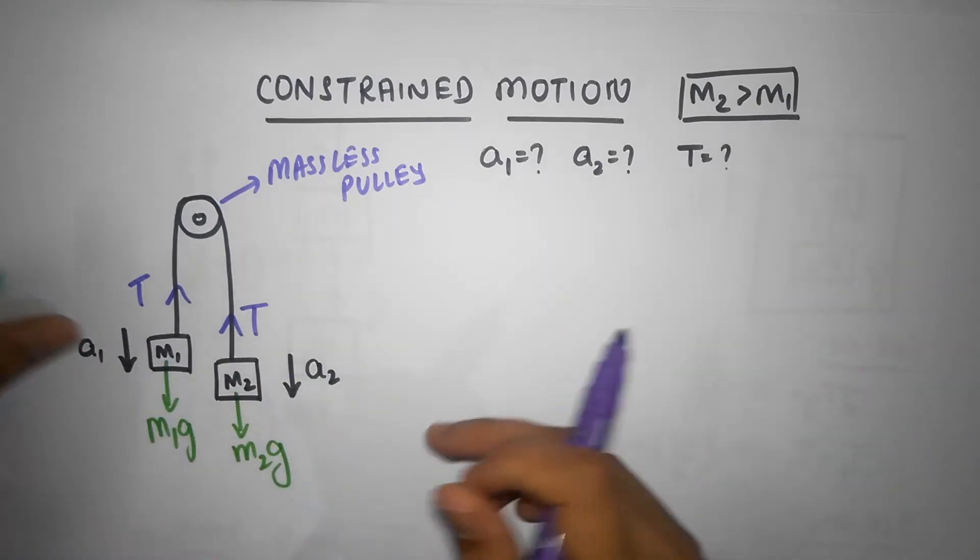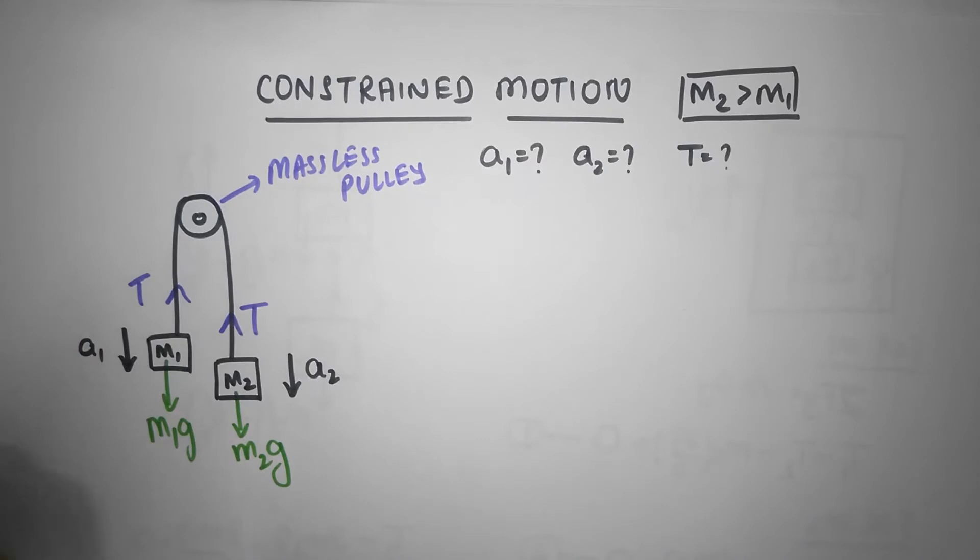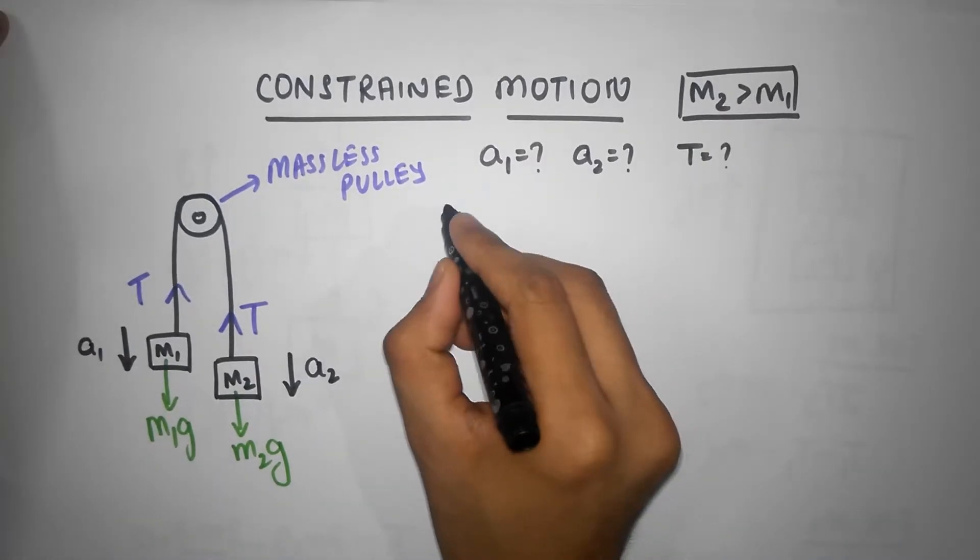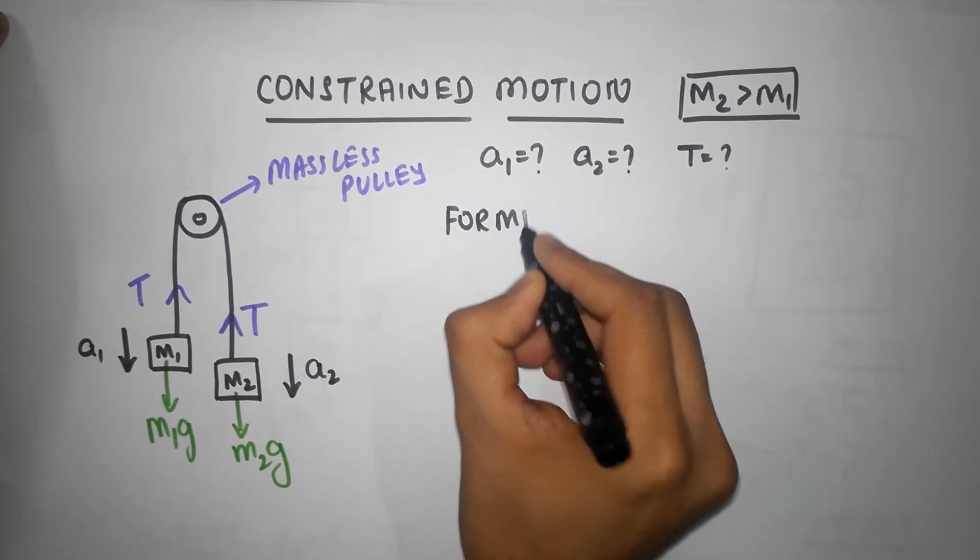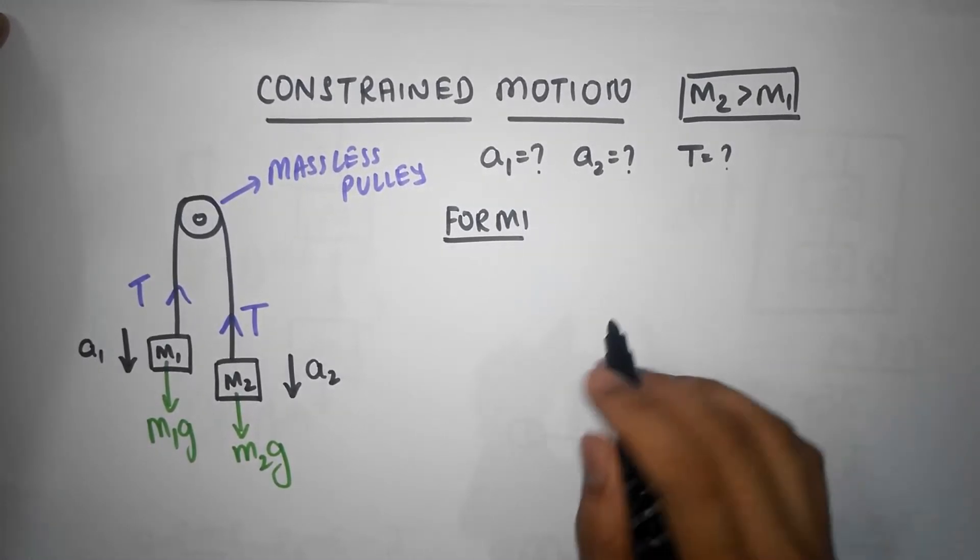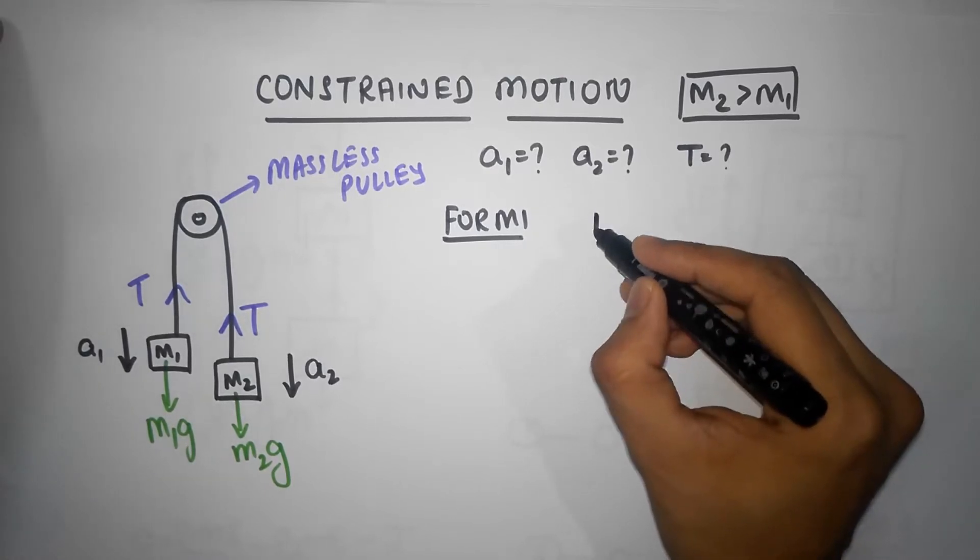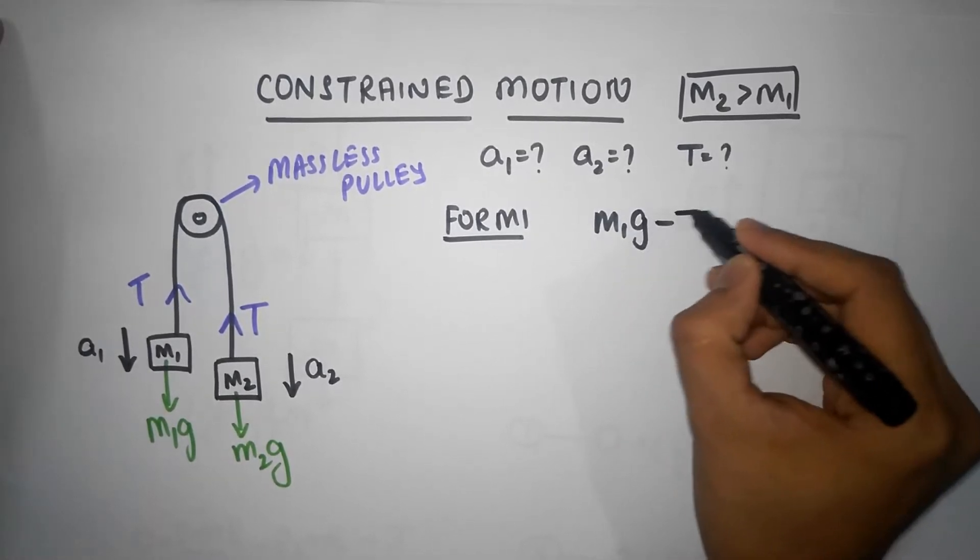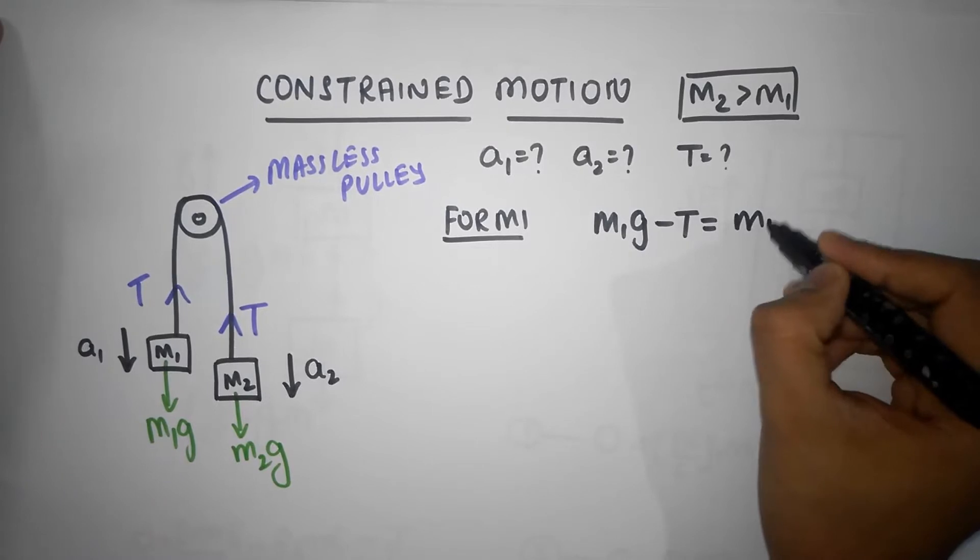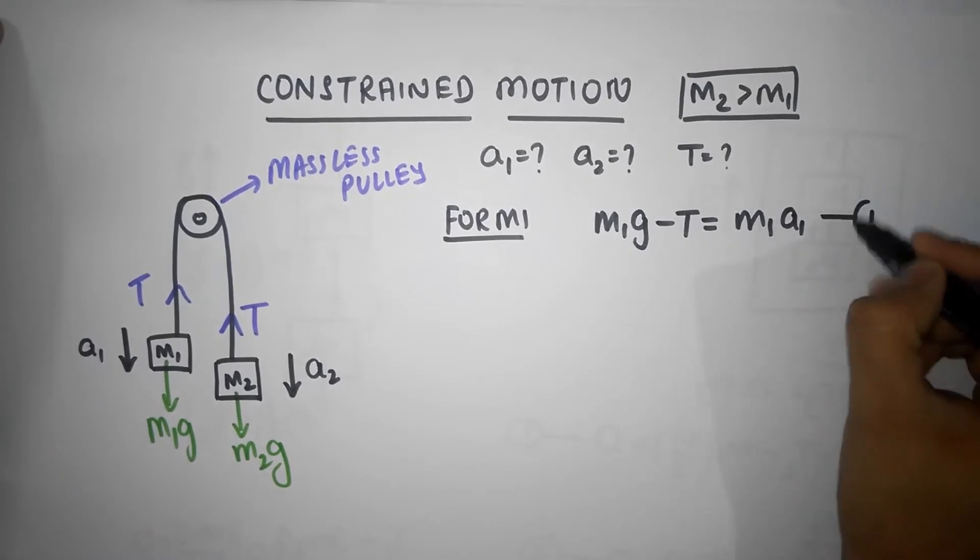Let's just make equations. So for M1, I'm going to take downwards positive, so it's going to be M1g minus T equal to M1 A1. That's equation number one.